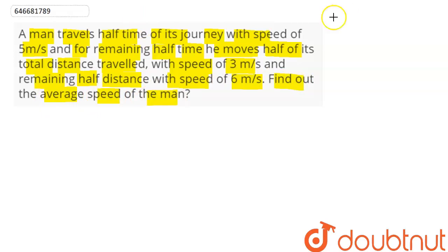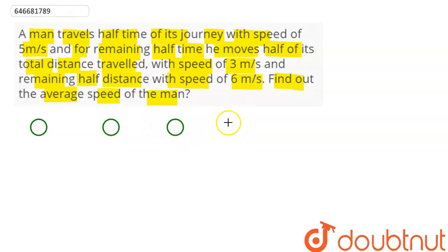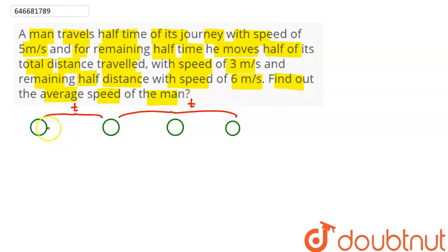Suppose this is the man. This man is moving half of the time from point A to B. For the remaining half time, he covers half distance at one speed and the other half distance at another speed. This time is given to be T, so this whole time will also be equal to T. For half of the time he moves with a speed of 5 meters per second. The two remaining distances are each S.